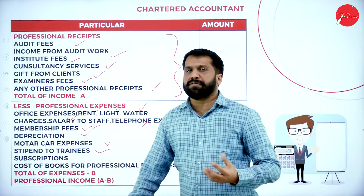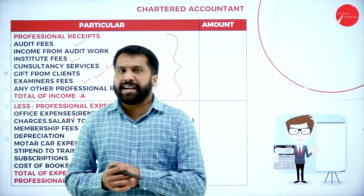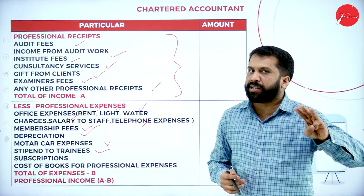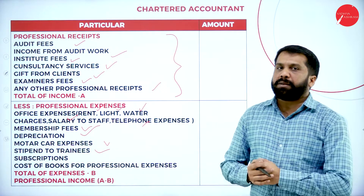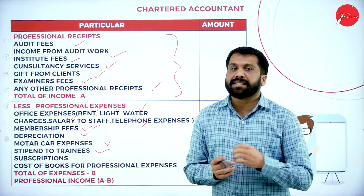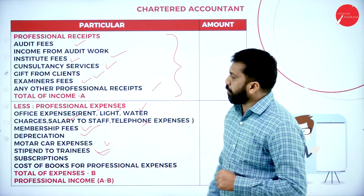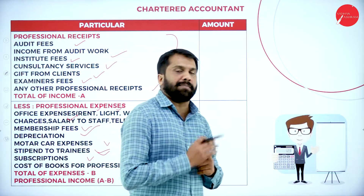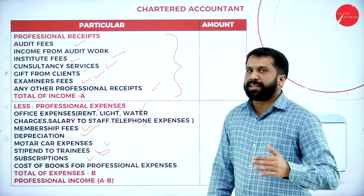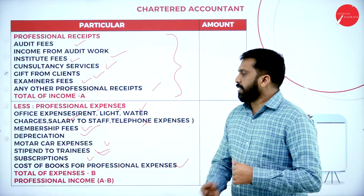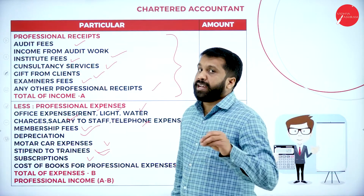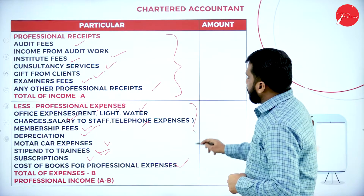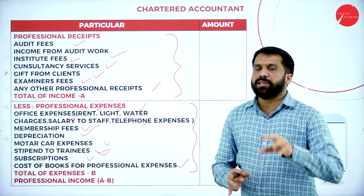Stipend to trainees: if you are a CA, trainees work at your office for three years — that period is called trainee period, and what they receive is called stipend, not salary. That is your professional expenditure. Subscription — you subscribe to journals for income tax updates — that is also an expense. Cost of books for profession: if you buy income tax books or company law books, those come under professional expenditure, but story books would not. Income minus expenditure gives your final answer. That is all about the professional chapter for CA.